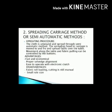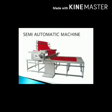Spreading carriage method or semi-automatic method — operating procedure: the cloth is unwound and spread through a semi-automatic method. The spreading head or carriage is moved end to end and spreads fabric over the table. Movement along the table and fabric pulling can be controlled by buttons. Advantages: fast and economical, proper selvedge alignment, operated with electronic clutch. Disadvantages: fabric roll loading, small roll size.